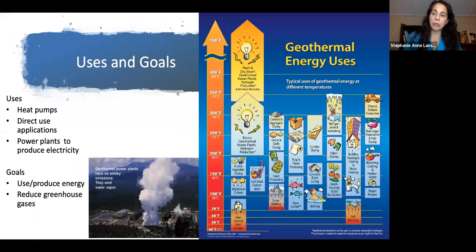Our goals and uses of geothermal include heat pumps, direct use applications, and producing electricity. The goal is to use this renewable energy from the earth's interior for electricity and heat, so we're not burning natural gas, coal, or using nuclear or other sources to get electricity.